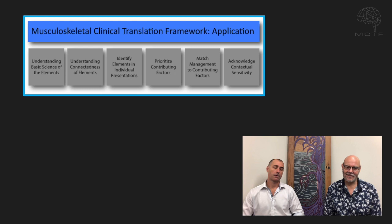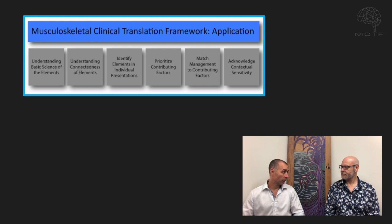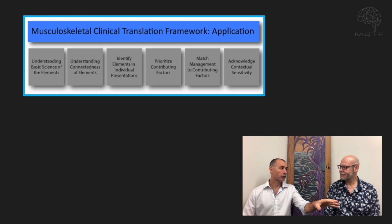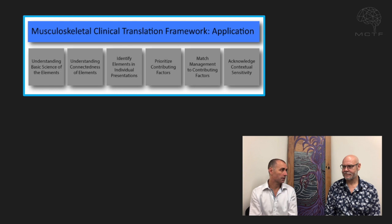The next point is understanding the connectedness of the elements. They're definitely not in isolation and that relationship or connectedness can be bi-directional. A classic example might be that when you're in lots of pain that can impact your mood, but we also know the other way around that mood factors can have a direct impact on pain experience. It's really important to be clear that they're not in isolation — it's not a linear step-by-step process where you treat this part and then that part. Things are going to shift and the weighting of what's happening for that person will change over time.